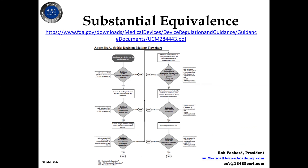This is just the decision flowchart for the 510k process, and it has six decision points. The first one is: is your predicate device that you've selected a legally marketed device? How do you determine that? We can help you select a predicate device. You might have thought of one, but it might not be a suitable or legal one. So that's one of the things we help companies with — identifying your predicate.